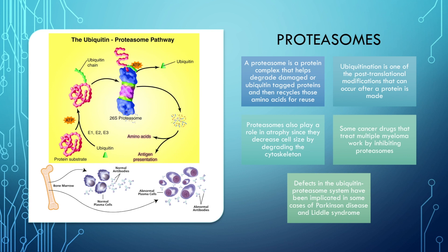There are even some cancer drugs that work by inhibiting proteasomes. For example, there is a cancer called multiple myeloma. In multiple myeloma, there are lots of cancerous plasma cells, which make a lot of antibodies or immunoglobulins. These plasma cells are susceptible to proteasome inhibition since they produce so much protein. If we inhibit the proteasomes, these proteins accumulate in the cell, become toxic, and cause the cell to undergo apoptosis.